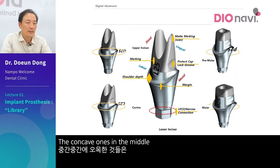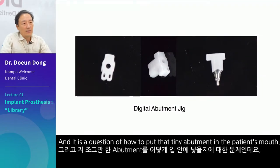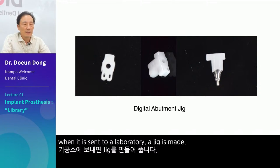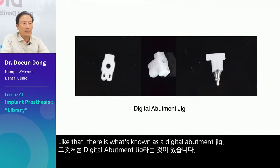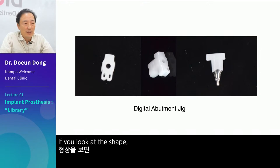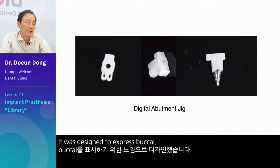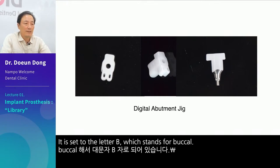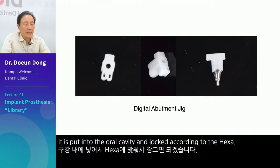The concave ones in the middle are designed to be compatible with protect caps. And there is a question of how to put that tiny abutment in the patient's mouth — there is a jig. Usually in analog, when it is sent to a laboratory, a jig is made. Like that, there is what's known as a digital abutment jig. If you look at the shape, the convex part that descends like a rabbit's ear is called B, designed to express buckle. After inserting here, it is put into the oral cavity and locked according to the hexa.